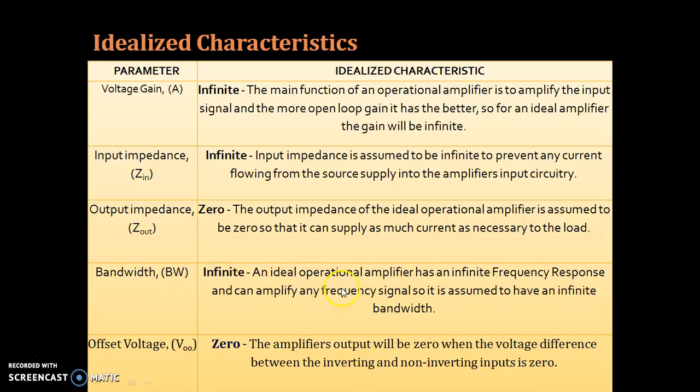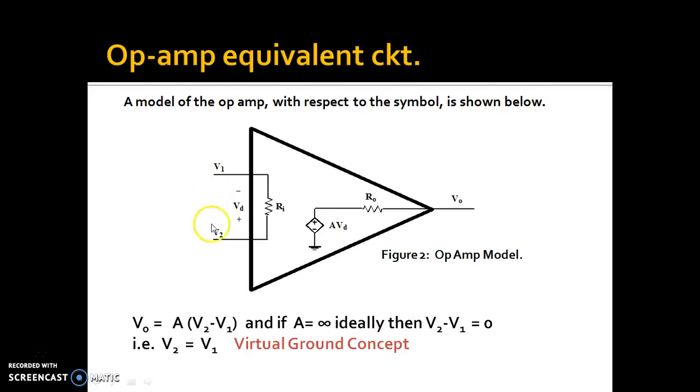The bandwidth is infinite. The op-amp can amplify any frequency signal in a very wide range. Offset voltage will be zero. That means if there is no input signal voltage at these two input terminals, the output voltage will be zero.